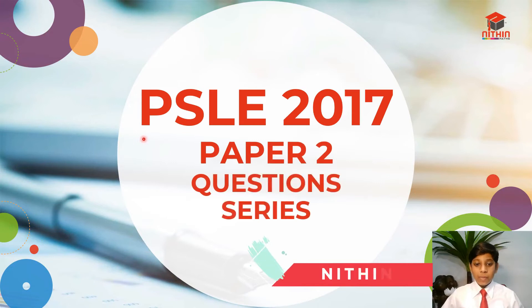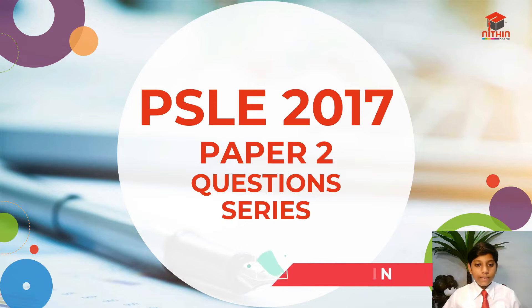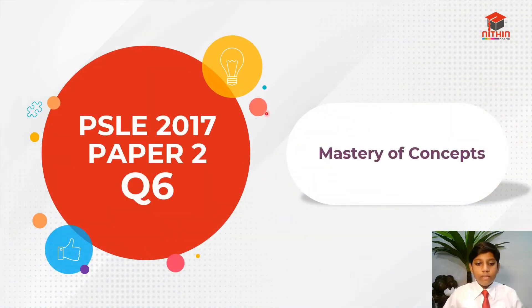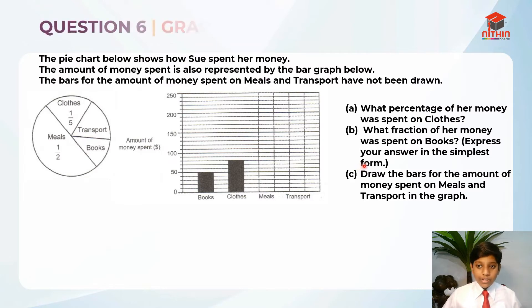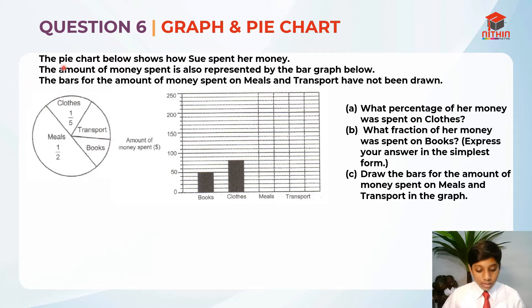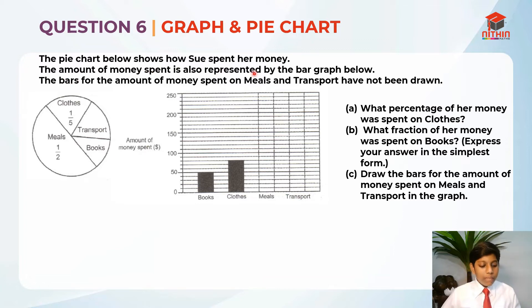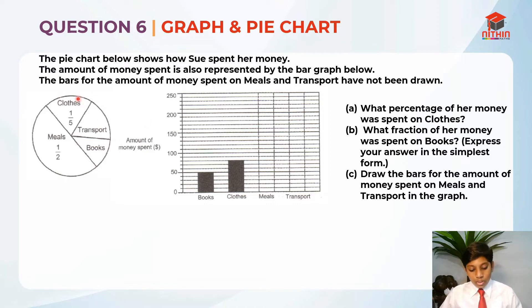Hi everybody, I'm Nitin and today in this PSLE 2017 Paper 2 question series we are going through question 6. In my channel I aim to help all of you master all those concepts out there. So let's jump straight into question 6. This question is testing us on graph and pie chart. The pie chart below shows how Sue spends her money, also represented by a bar graph. The bars for the amount of money spent on meals and transport have not been drawn.